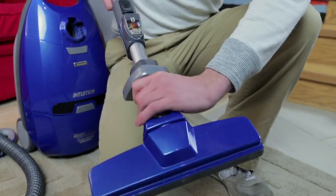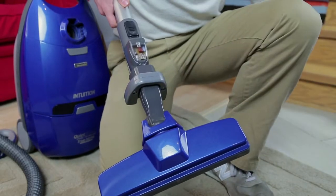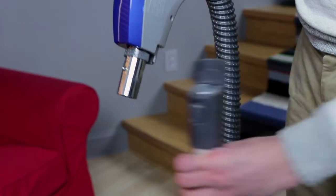Insert wand into Powermate until the wand button snaps into place. Insert handle into wand until lock button snaps into place.